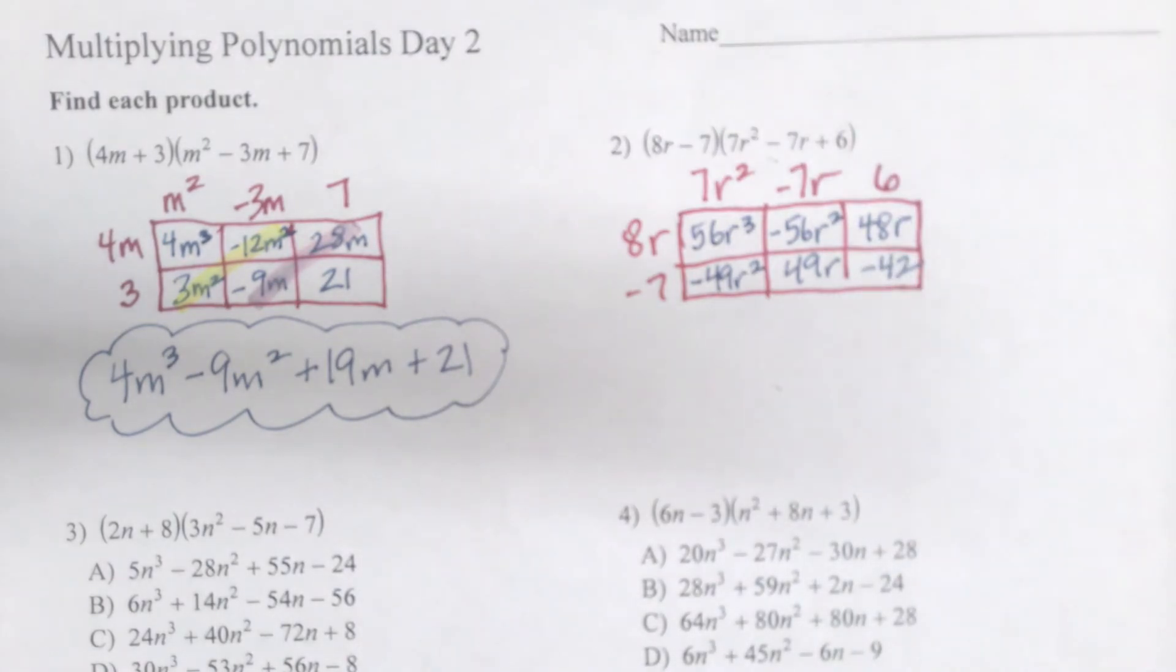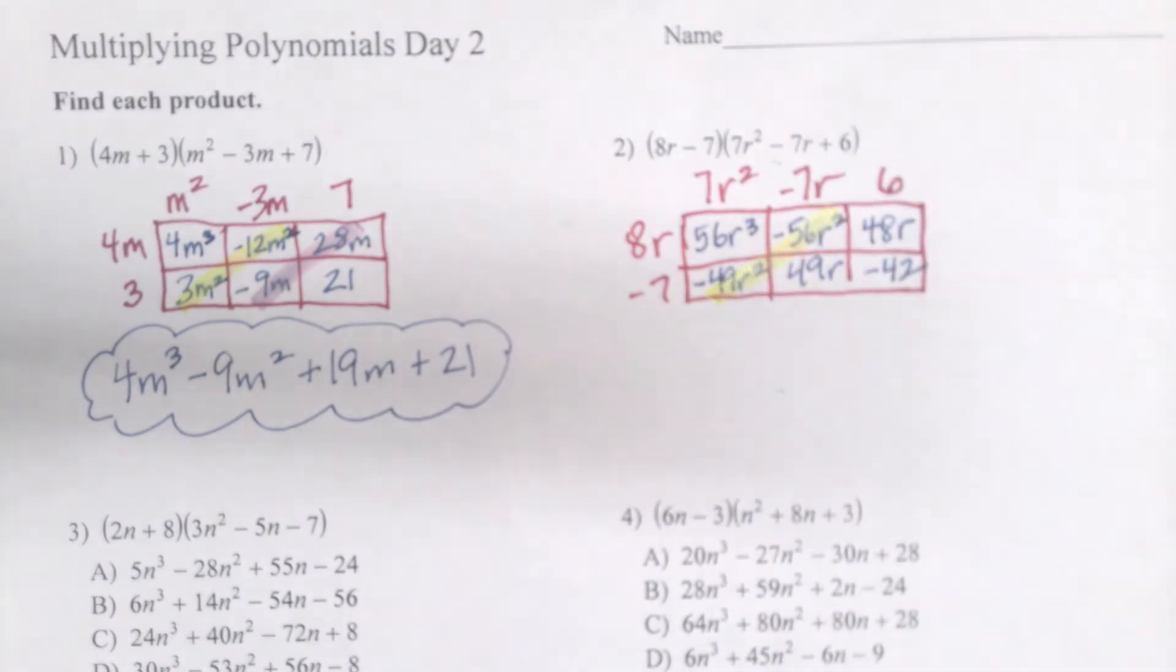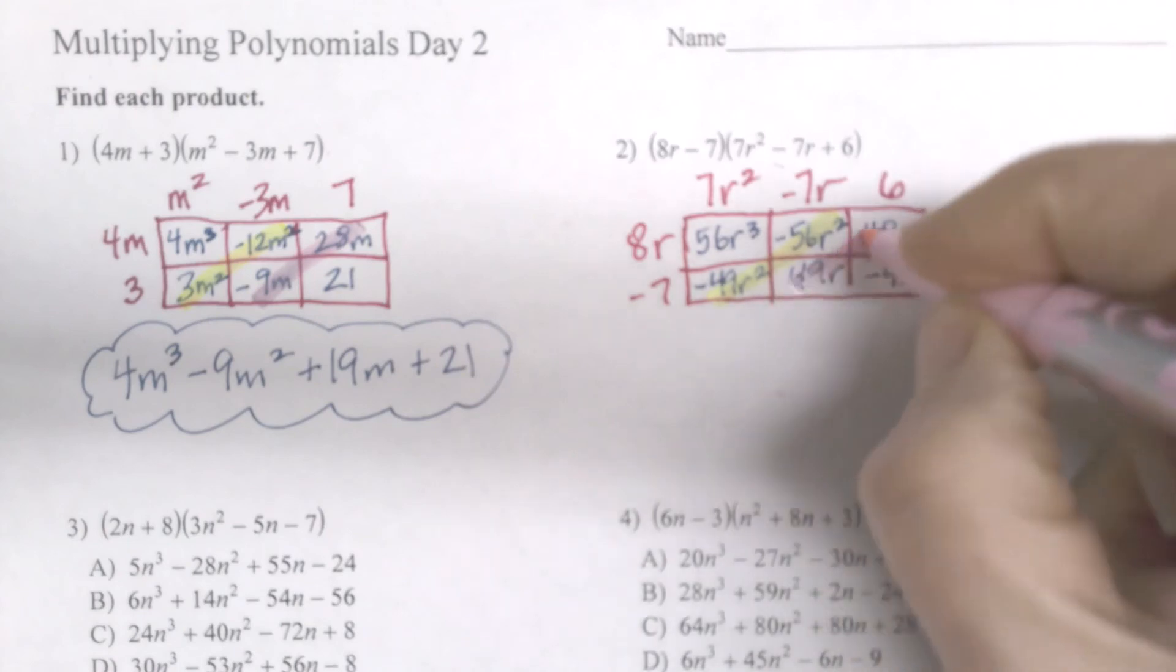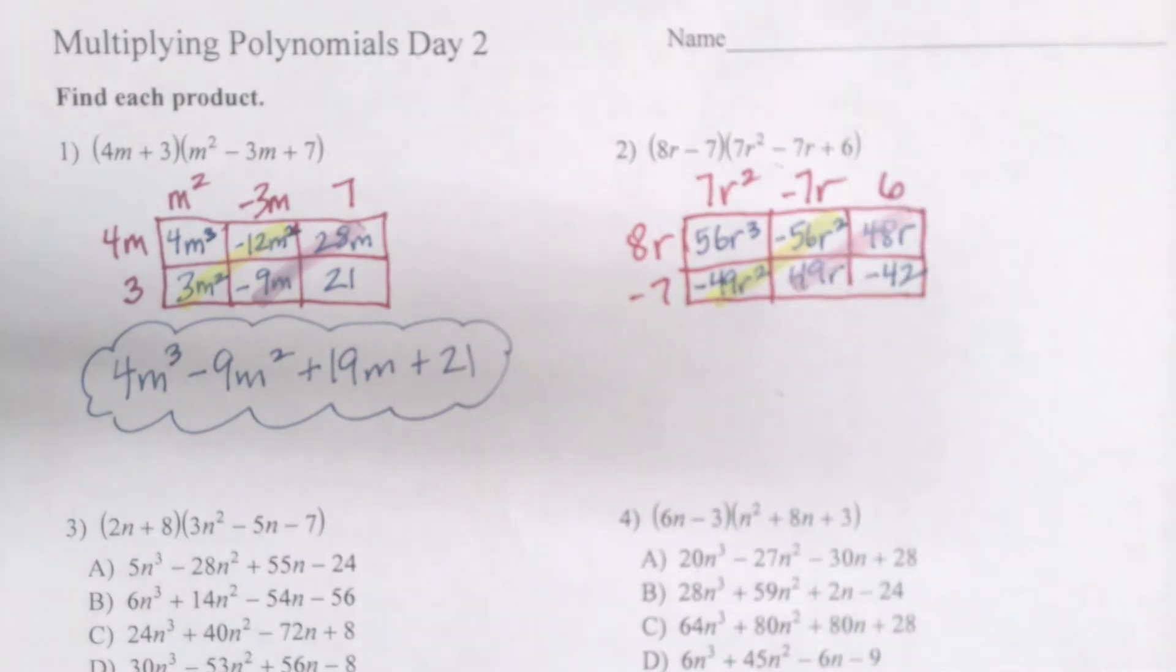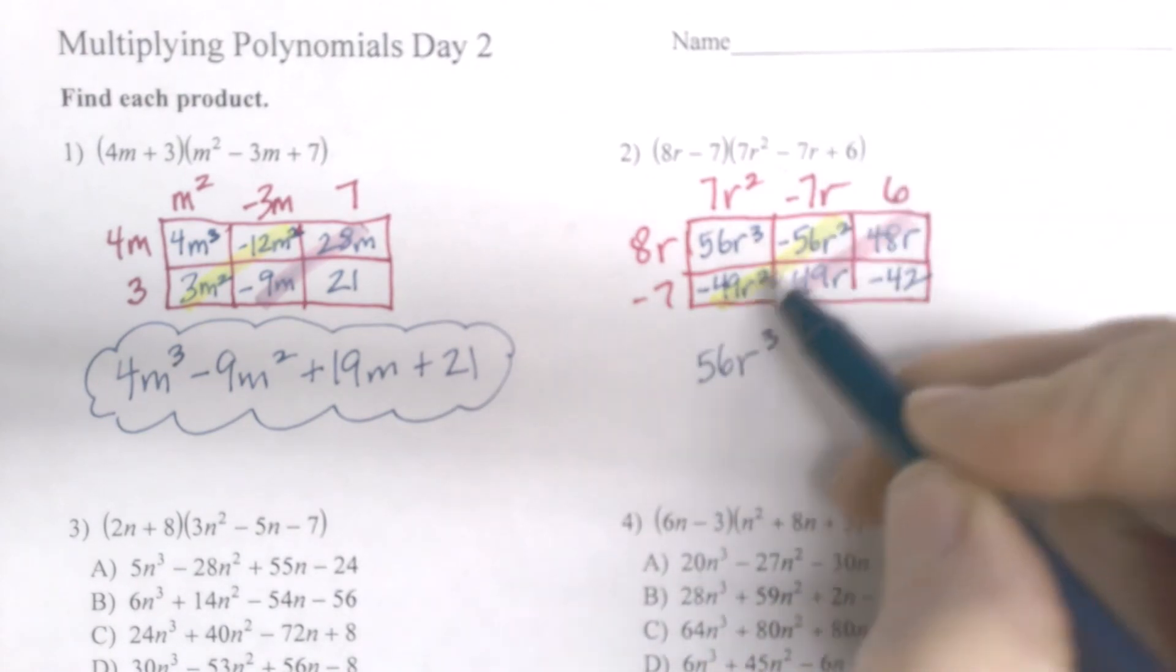And again, I'm going to look diagonal. I've got like terms, and like terms. And then I will do 56r cubed. Combine those. That's going to be a big one.